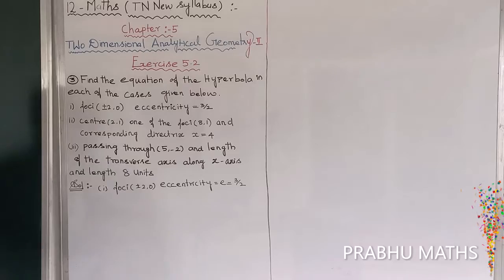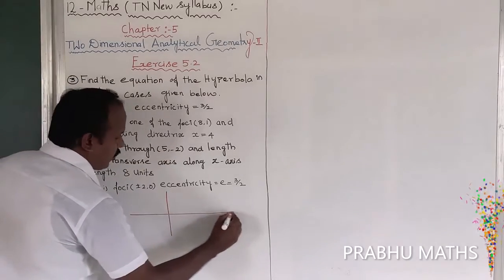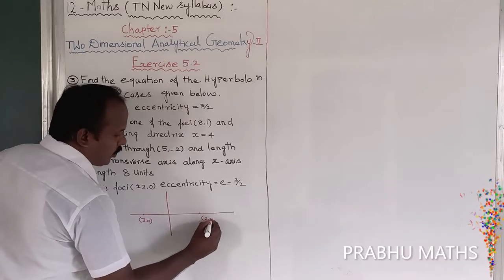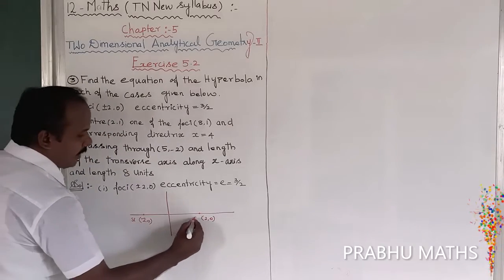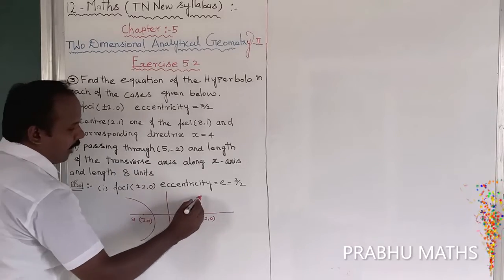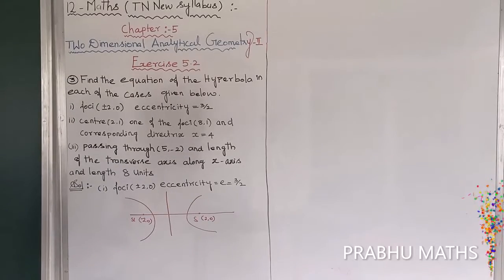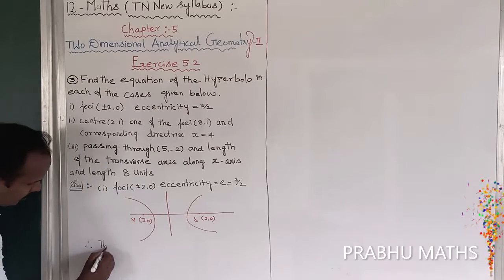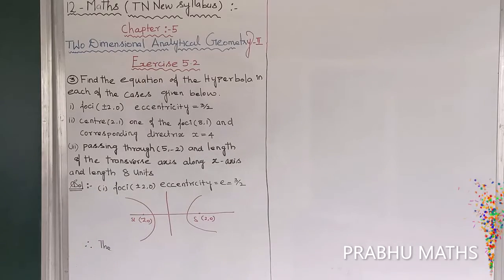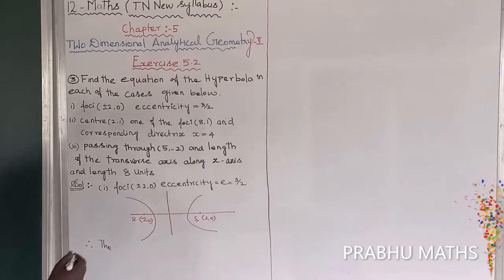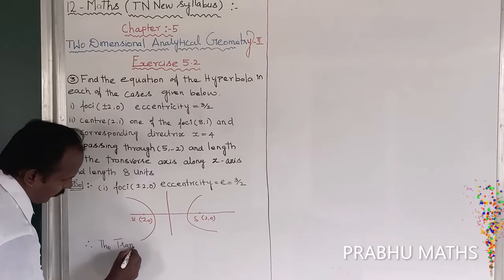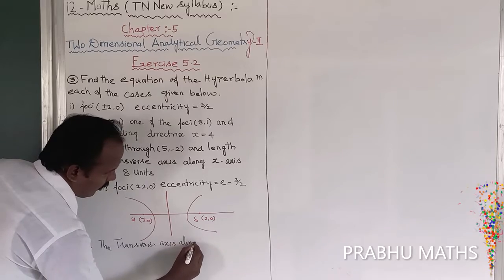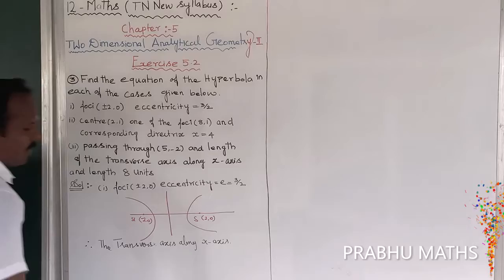To draw the diagram: the foci are at (−2, 0) and (+2, 0). These points lie on the x-axis, so the transverse axis is along the x-axis.